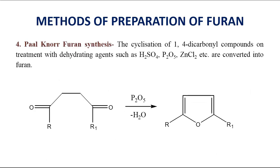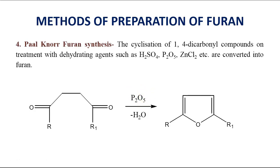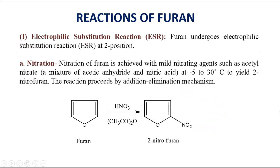The fourth method for synthesis of furan is by Paal-Knorr furan synthesis. In Paal-Knorr synthesis there is cyclization of a 1,4-dicarbonyl compound — a compound with a carbonyl group at the first and fourth positions. This 1,4-dicarbonyl compound on treatment with a dehydrating agent like phosphorous pentoxide, H₂SO₄, or zinc chloride is converted to a 1,4-substituted furan. Now let us discuss the reactions of furan.